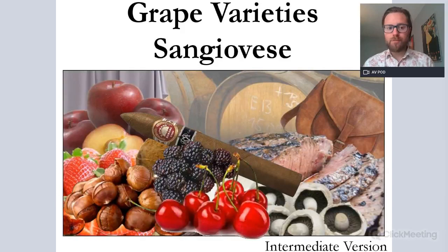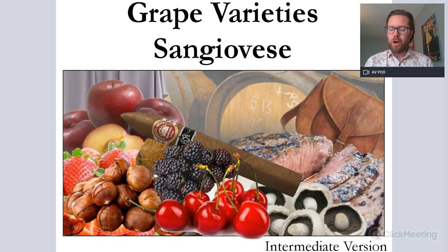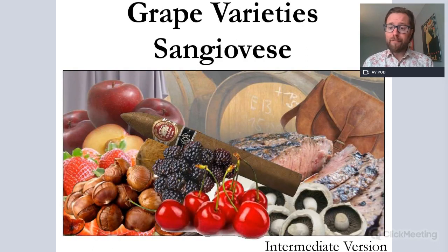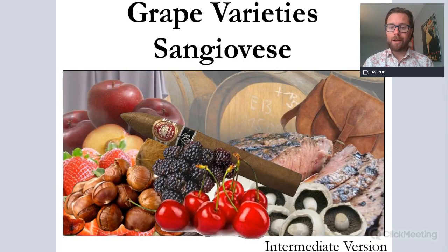Hello everybody, my name is Jimmy Smith and welcome to another session on grape varieties. We're looking at Sangiovese on this one and this is our intermediate version, very much ideal for those of you studying the WSET level two. If you require more information about Sangiovese — its grape synonyms, its etymology, its viticulture, its vinification, its geology and so on — please check out our advanced version which is ideal for WSET level three, level four and above.